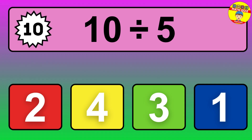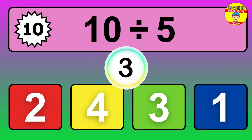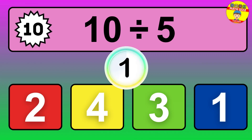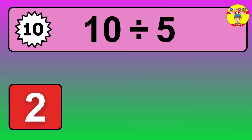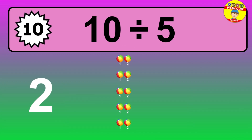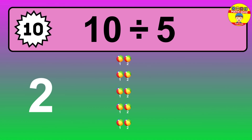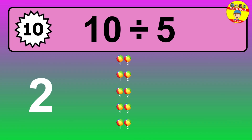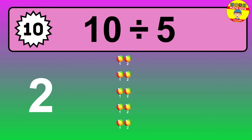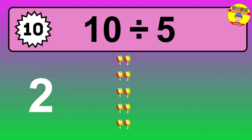What is 10 divided by 5? Picture this — you have 10 objects to divide into groups of 5. How many groups can you make? Let's think about it. Ready to find out? Let's break it down. Let's imagine you have 10 objects. Can you picture them lined up? Now think about splitting them equally into smaller groups of 5.